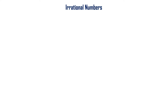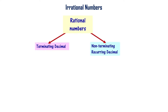Let us now learn about irrational numbers. Rational numbers are the numbers which can be written as ratio of two integers — the p by q formula, where p and q are integers and q should not be equal to zero. The decimal expansion of rational numbers are either terminating decimals or non-terminating but recurring decimals.